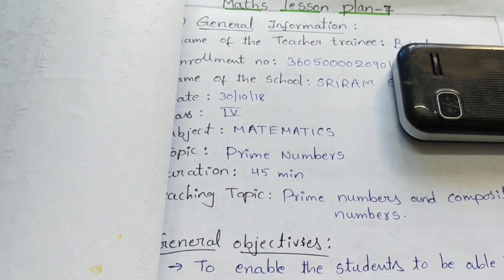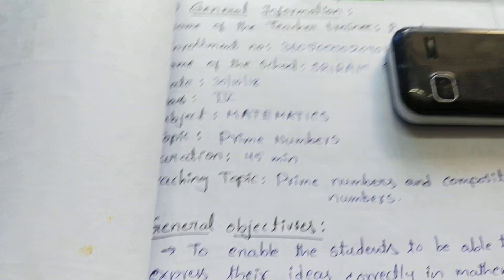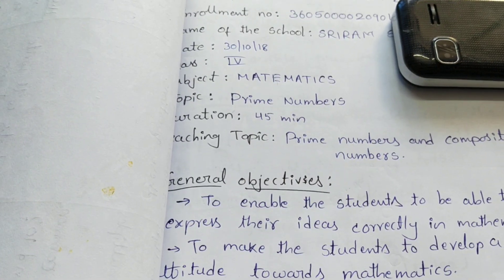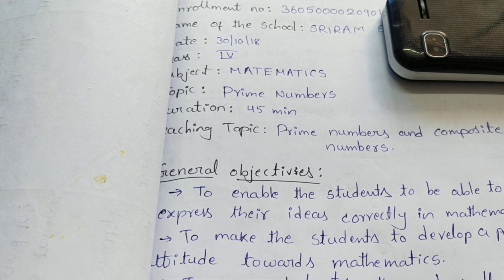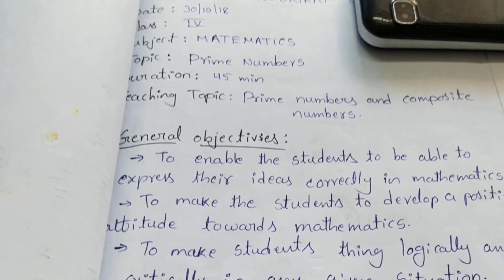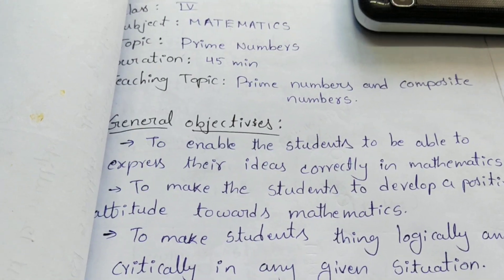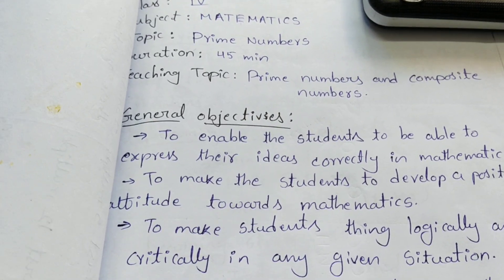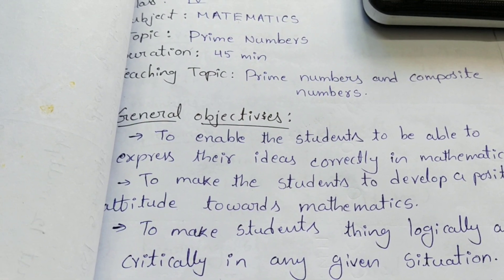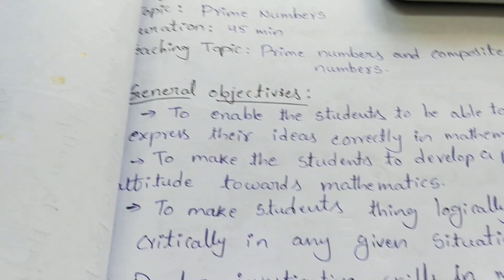Maths Lesson Plan 7. Subject is Mathematics. Topic is Prime Numbers. Teaching topic is Prime Numbers and Composite Numbers.